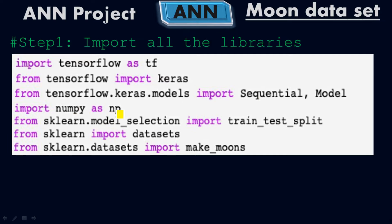Then we import numpy as np — 'np' is a short form for NumPy. NumPy is a Python array library used in deep learning. From sklearn (scikit-learn), the 'model_selection' sub-module provides train_test_split. We import train_test_split to split our data into training and testing sections.